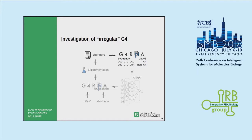My work focused on structures that fold but do not fit the canonical motif. I went through the literature to build a database of all sequences ever tested for folding, containing both G4-folding and non-G4-folding sequences — this is G4RNA. At first we thought we could derive rules directly from the data, but it turned out to be much more complicated than expected.